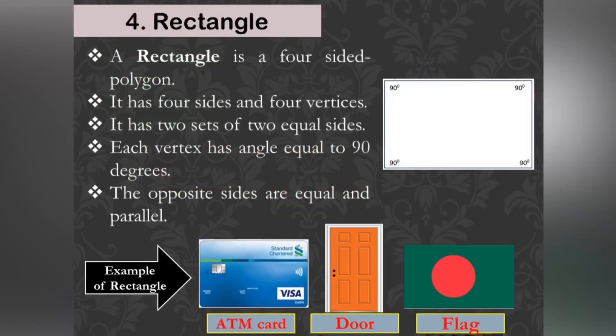Rectangle: A rectangle is a four-sided polygon, having four sides and four corners. Its two sides meet at right angles. Thus, a rectangle has four angles, each measuring 90 degrees.